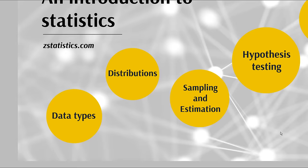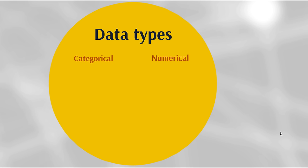The first thing we're going to delve into is what types of data we encounter when dealing with statistics. Roughly, we can divide data into two distinct classes: categorical data and numerical data. These sound somewhat self-explanatory because they are — numerical means numbers and categorical means categories.